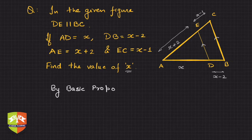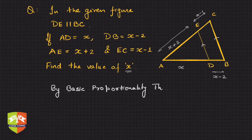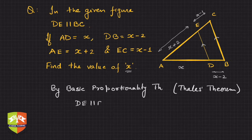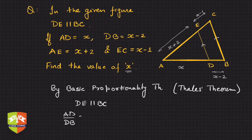By Basic Proportionality Theorem, which is also called Thales Theorem, we know that in a triangle, if DE is parallel to BC, then AD upon DB is equal to AE upon EC.